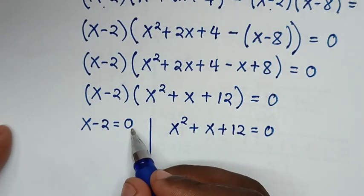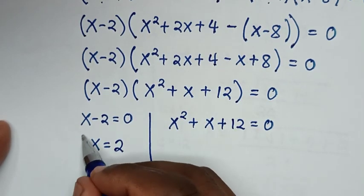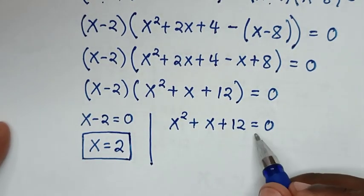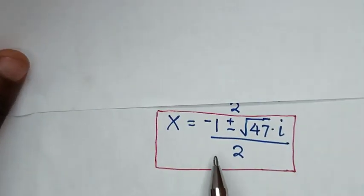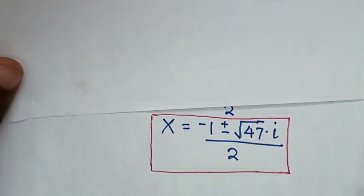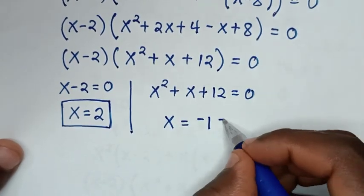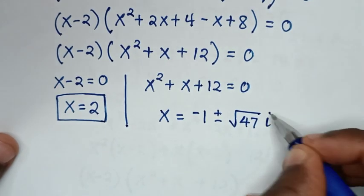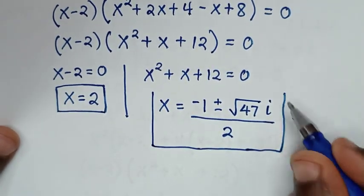From x − 2 = 0, we get x = 2, which is the same value as in the first method. Solving x² + x + 12 = 0 by the quadratic formula gives x = (−1 ± √(−47)) / 2, which is a complex solution.